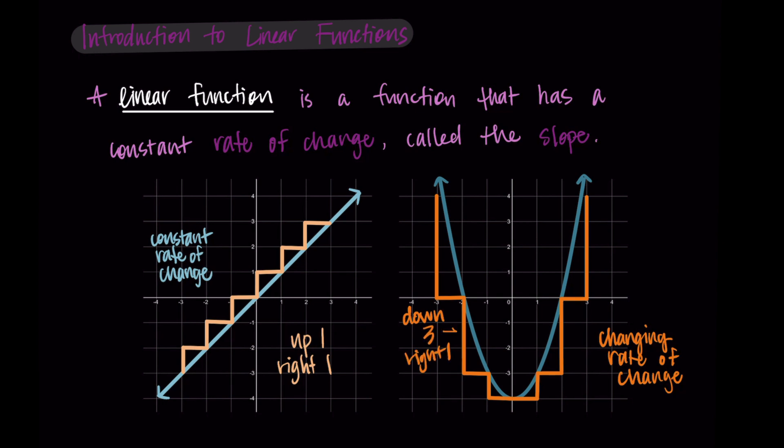So at every point, the rate of change is different, and so it's constantly changing. Another way to say this is that it has a changing slope, whereas the linear function has a constant slope.